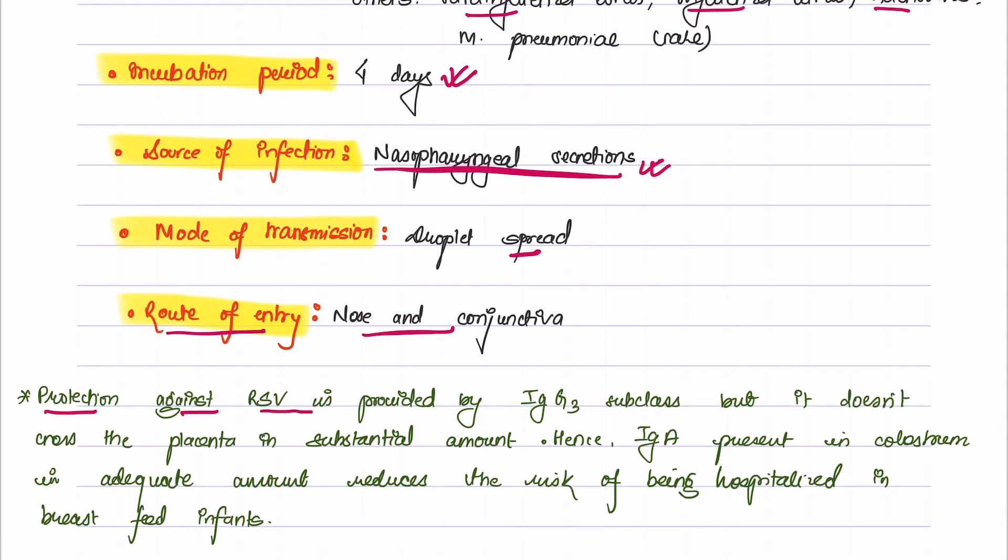The protection against respiratory syncytial virus is provided by IgG subclass antibodies, but it does not cross the placenta in substantial amounts to provide protection. Hence, the immunoglobulin IgA present in colostrum, which is present in adequate amounts, is mainly responsible to reduce the risk of being hospitalized in breastfed infants.